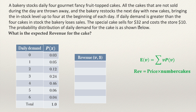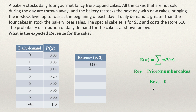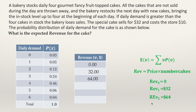Revenue equals price times the number of cakes sold. If you sell zero cakes, it will be 0 × $32 = $0, so the revenue for zero cakes is $0. When you sell one cake, the revenue is $32 (32 × 1). Another possible value is selling two cakes: 2 × 32 = $64. And selling three cakes gives 32 × 3 = $96.